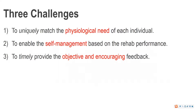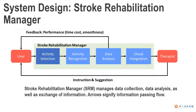The third challenge is to timely provide objective and encouraging feedback. For this challenge, we implement the stroke rehabilitation manager to manage data collection, data analysis, as well as the exchange of information on the smartphone. Arrows in this figure signify the information-passing flow. The smartphone UI provides real-time feedback, and data is uploaded to the Amazon cloud server at the end of each day to allow therapists to monitor the rehabilitation remotely.